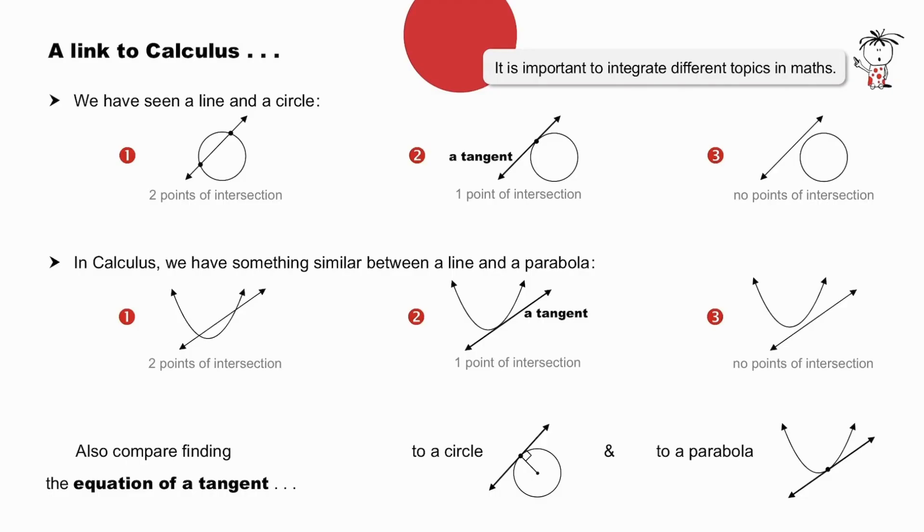And this line cutting the circle. This line touching the circle. So, too, in calculus, we have something similar between a line and a parabola. Two points of intersection, or one point of intersection, or no points of intersection. In this case, the line cuts the parabola. In this case, the line touches the parabola, in which case, the line is a tangent. Or, the line does not touch or cut. Also, finding the equation of a tangent to a circle, and in calculus, to a parabola, will be very similar in process.